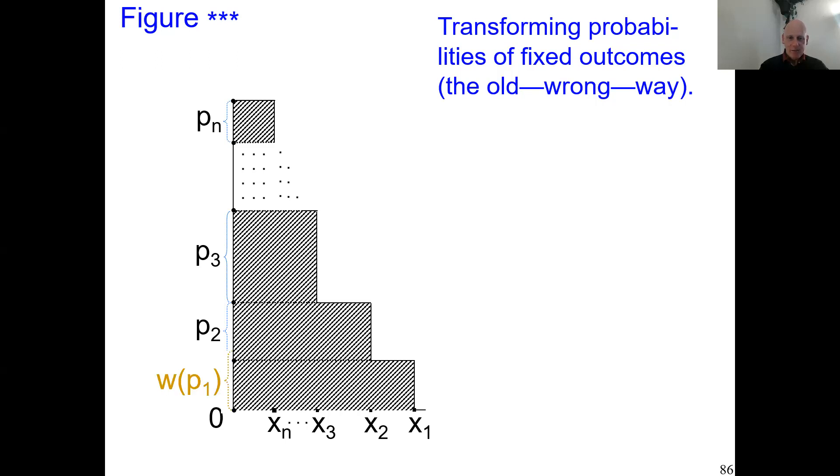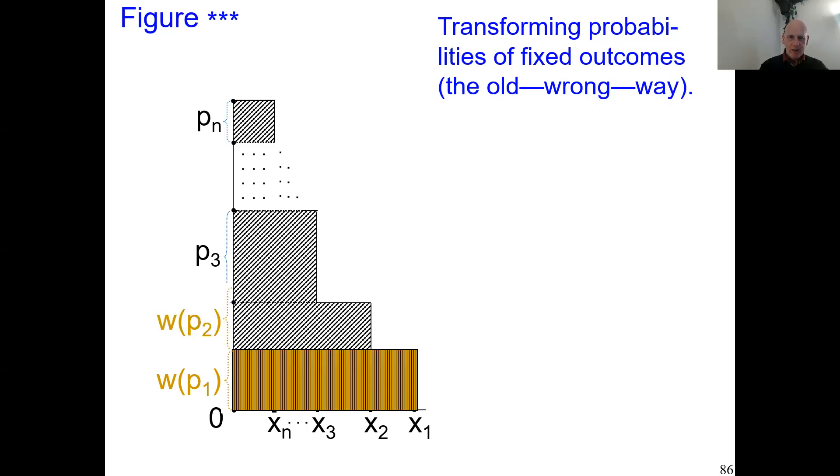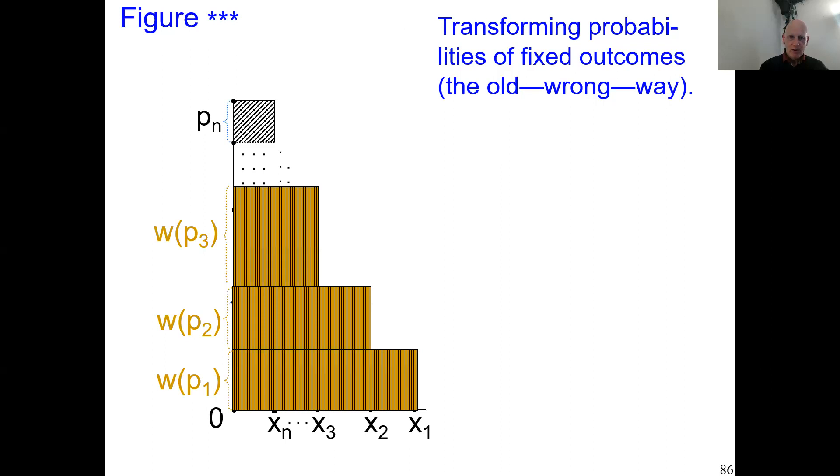Then what the psychologists did is they replace p1 by w(p1), next they replace the value p2 by w(p2), and so on. They do that for every layer. That means for every height they transform the distance from that point to its lower neighbor into its w value.